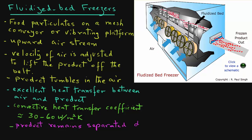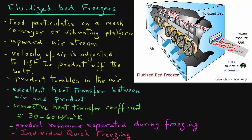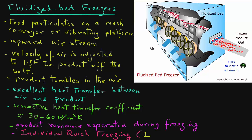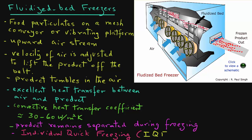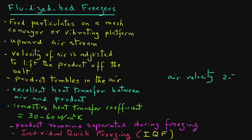it freezes while remaining separate from neighboring particles. So, food particles are frozen in an individual manner, and we call it individual quick freezing, or IQF. We can get similar results also on a regular belt freezer, but in the case of the fluidized bed, you have better separation of the particles and individual quick freezing.